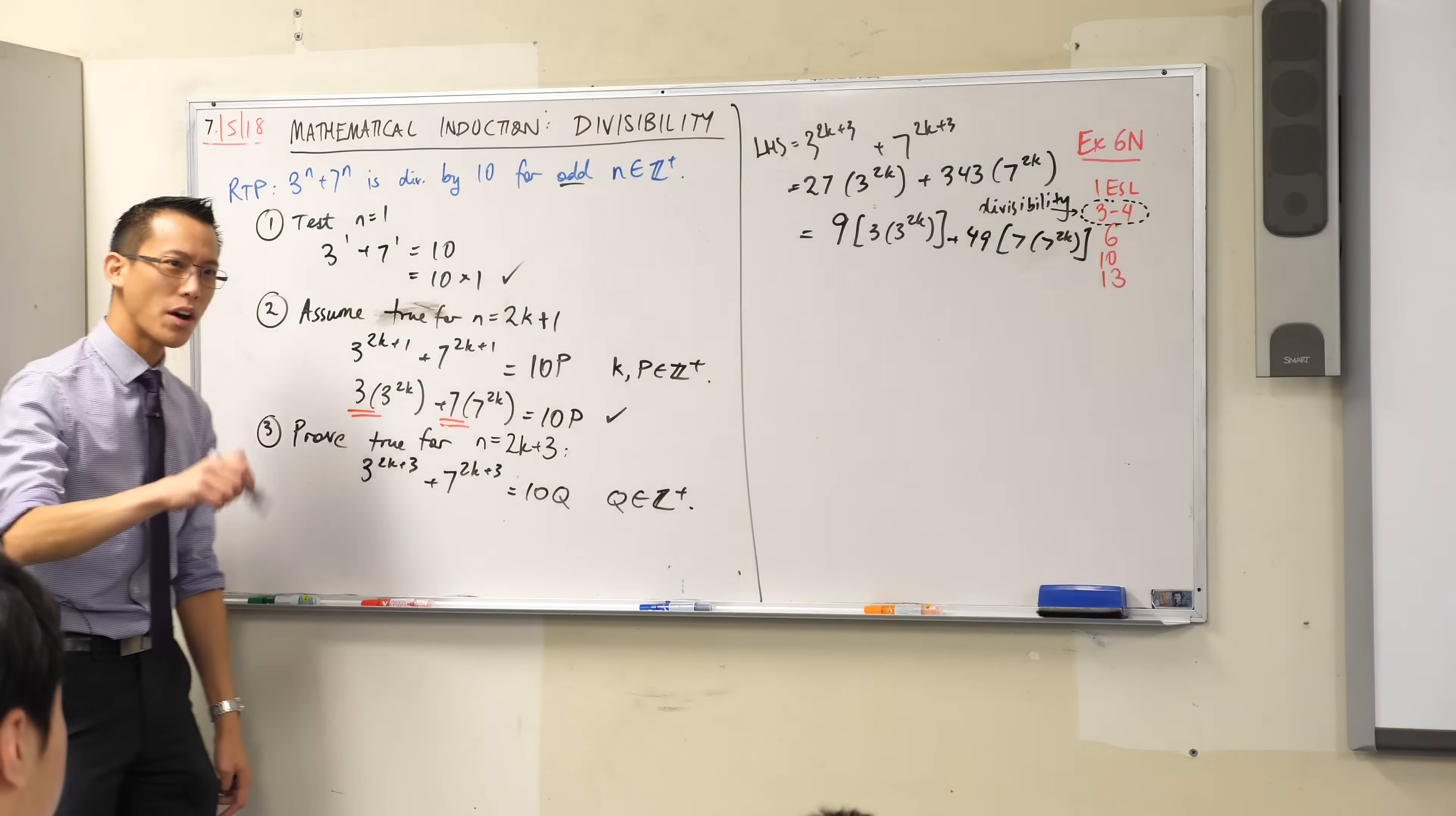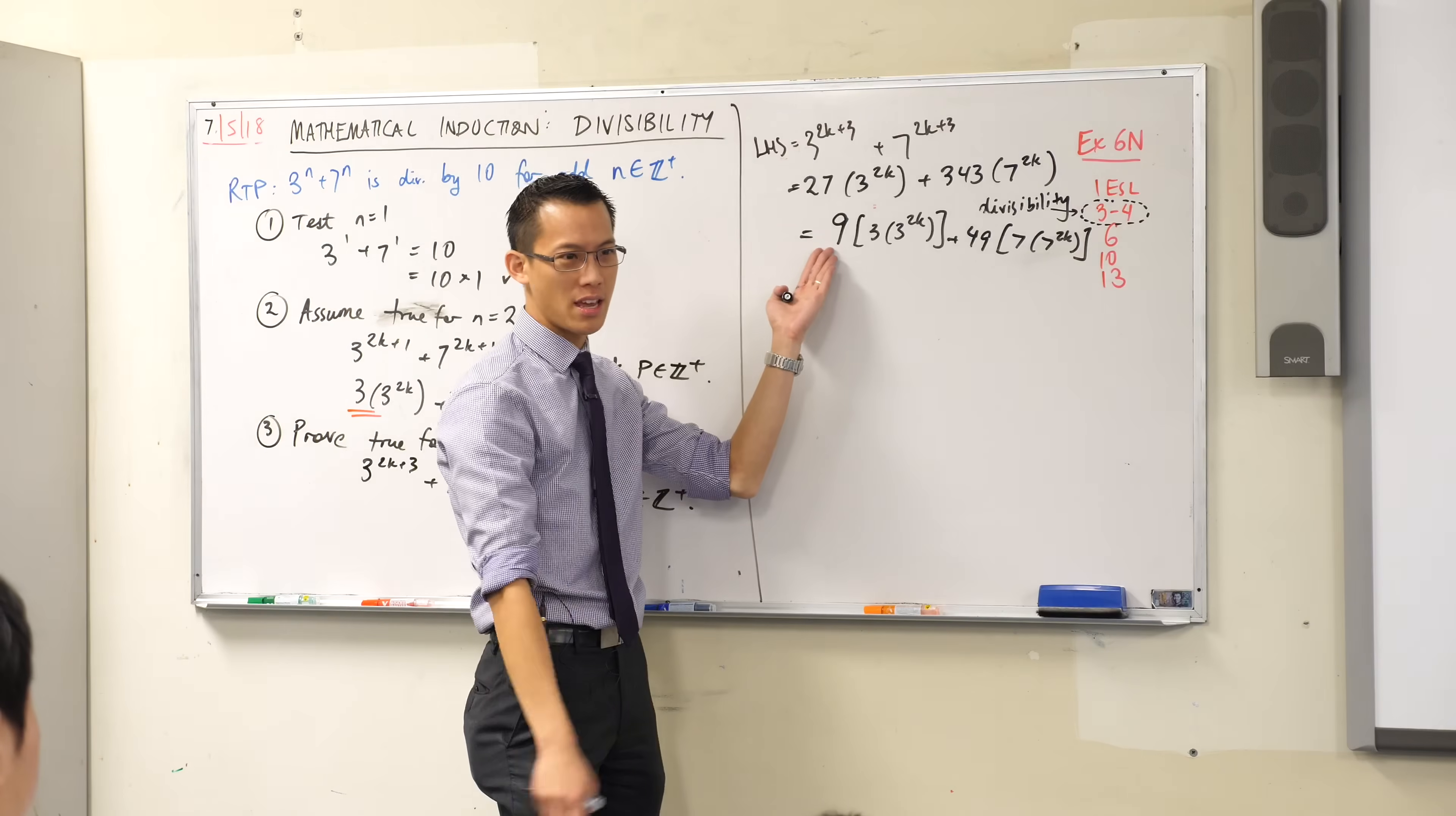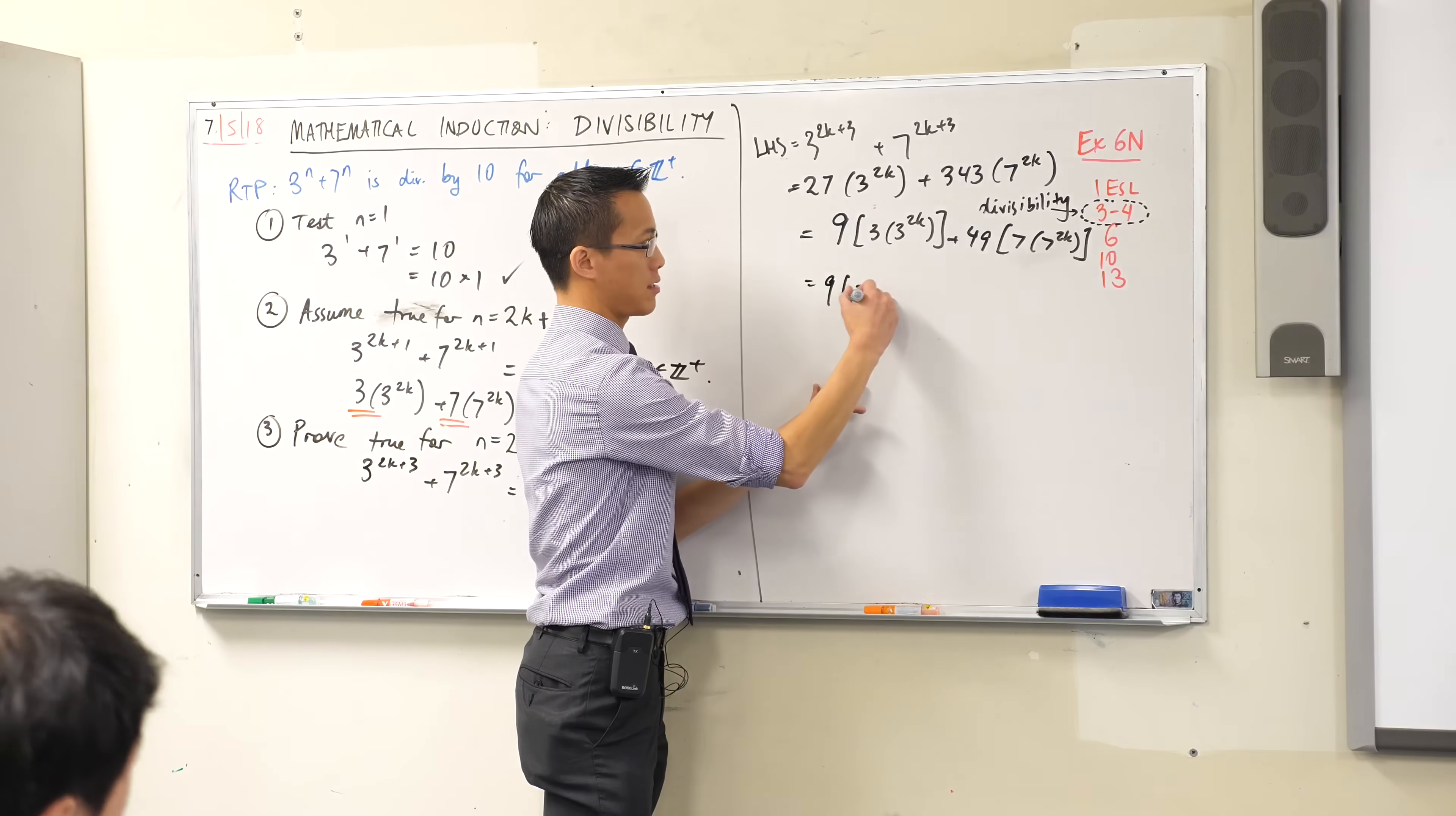Now, what can I do to make these guys easiest to see and do a substitution? Well, I want there to be some even number of these. I've got 9 of them here, so I can pull 9 out of here as well, right? You see that? 9 lots of this. 9 lots of this.